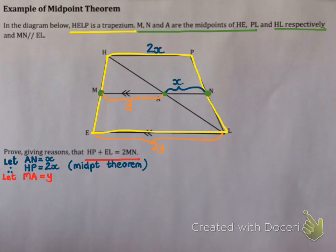Then I'm going to say let MA be equal to Y. Therefore EL would be 2Y, and our reason again is the midpoint theorem. Well, this means that we can create an expression for HP plus EL because HP plus EL will be 2X plus 2Y. I don't need a reason for that because that simply follows from what I've stated above.